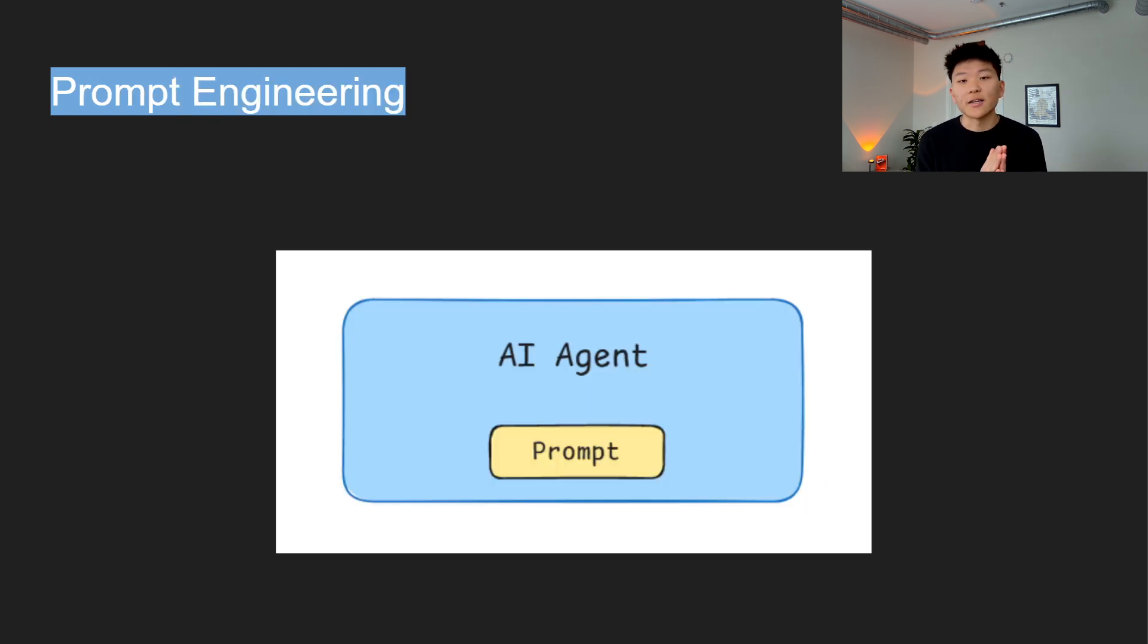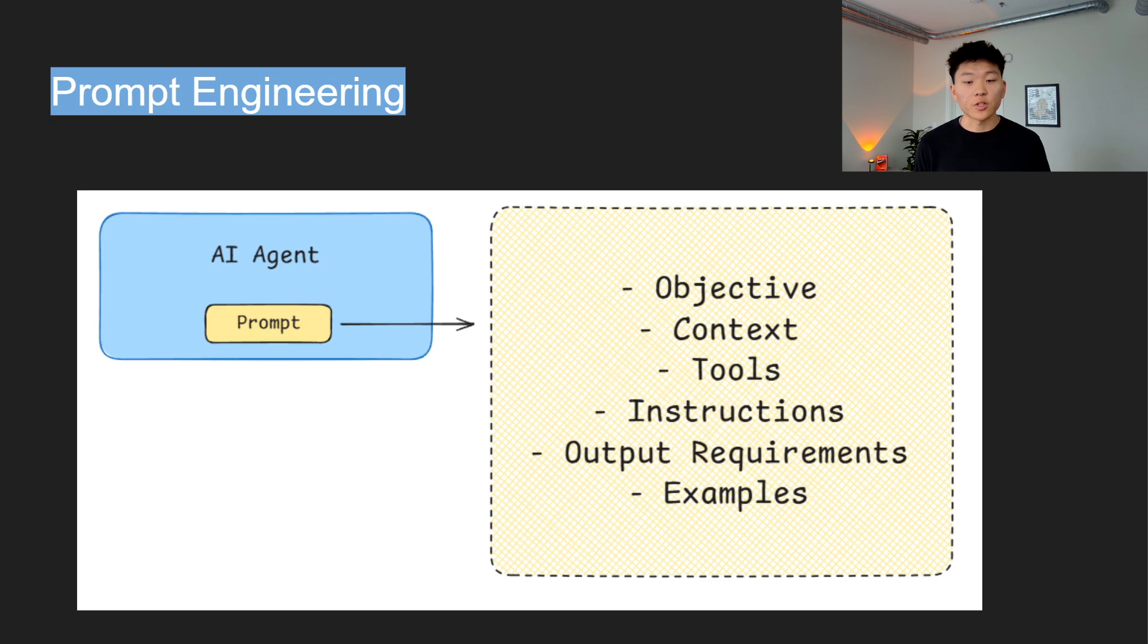All right, so now moving on to what is probably the most critical skill for making agents that work as expected, which is prompt engineering. The quality of your prompts determines the quality of your agent's output. A well-crafted prompt guides the agent's reasoning, ensures it understands the tasks, and reduces errors. So it's super important. So there are a few essential components to every strong prompt, and breaking these down will help you engineer them effectively.